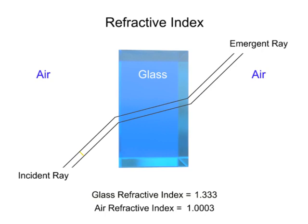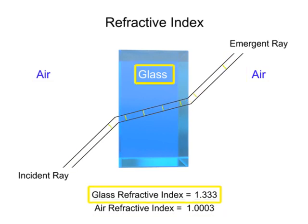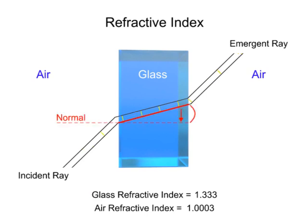Anytime a light beam travels from a medium with a low index of refraction, like air, to a medium with a higher index of refraction, like glass, the beam of light will bend toward the normal.